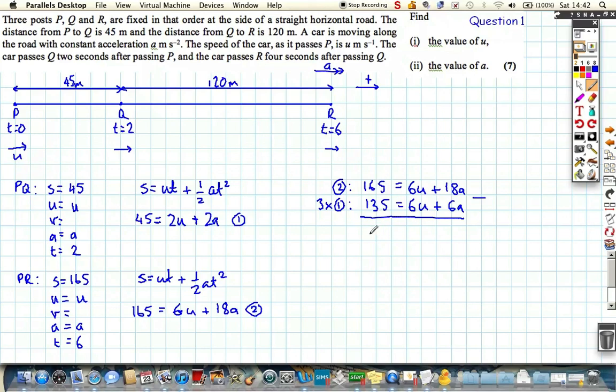Which gives us that a is 2.5 m/s². Now we didn't want to find that one first, but we've done it. We can just easily substitute this back in.